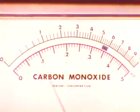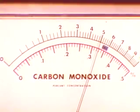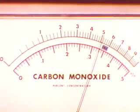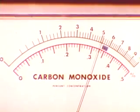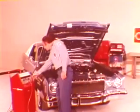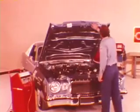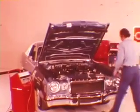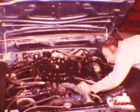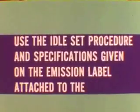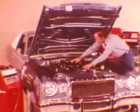For some time now, you have achieved both the correct emission levels and good drivability by using an exhaust emission analyzer. This important service instrument will continue to be your main diagnostic tool for adjusting idle speed and mixture on all pre-1977 vehicles. In every case, use the idle set procedure and specifications given on the emission label attached to the car.